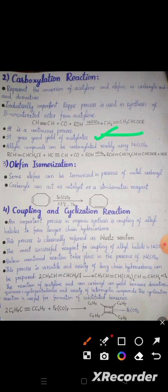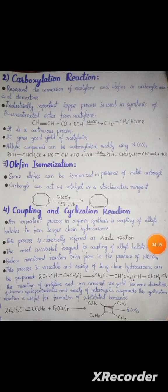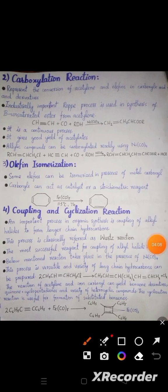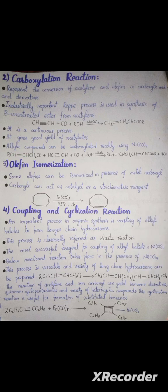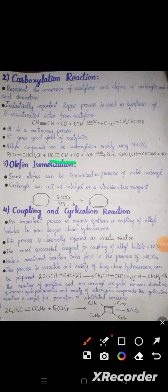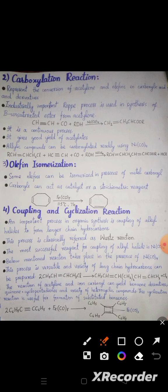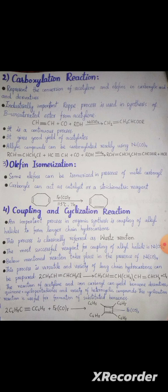Allylic compounds can be carboxylated readily using nickel tetracarbonyl, Ni(CO)₄. For example, an alkyne reacts to give a product of the form CH=CHCH=CH-COOR plus HCl. Next, olefin isomerization: some olefins can be isomerized in the presence of metal carbonyls. Metal carbonyls can act as catalyst or as a stoichiometric reagent in these reactions.